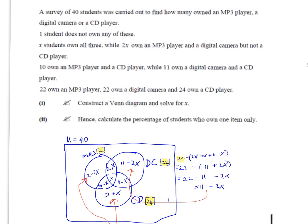If you read through the information here, it says x students owned all three, so clearly x goes in the middle. After that, I try and work my way outwards to figure out what goes in here.